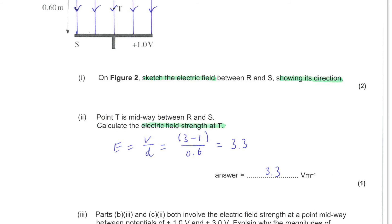And the equation for electric field strength between parallel plates is just the potential difference divided by the separation of the plates. Now, since one plate was at 3 volts and the other at 1 volt that gives a difference of 2 volts which we divide by 0.6 to give the answer of 3.3 volts per meter.